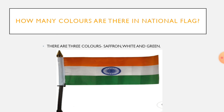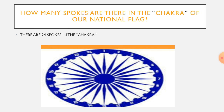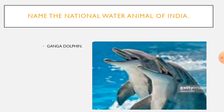In the middle band, there is a chakra which is blue in color. The colors of our national flag are saffron, white and green. How many spokes are there in the chakra of our national flag? There are 24 spokes in the chakra. And name the national water animal of India. It's Ganga Dolphin. Ganga Dolphin is the national water animal of India.